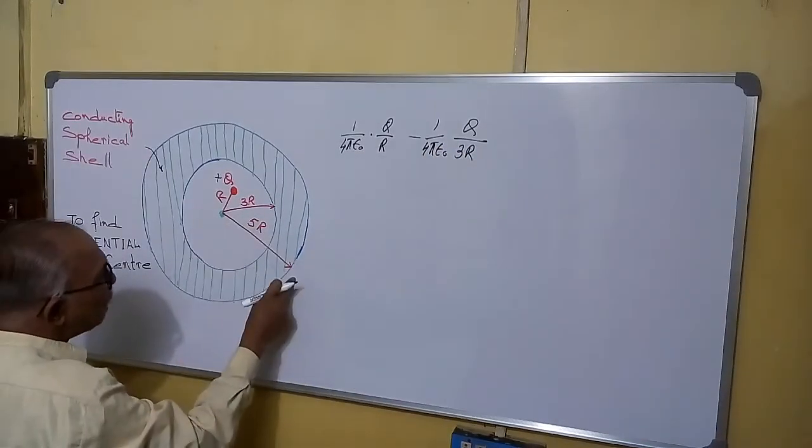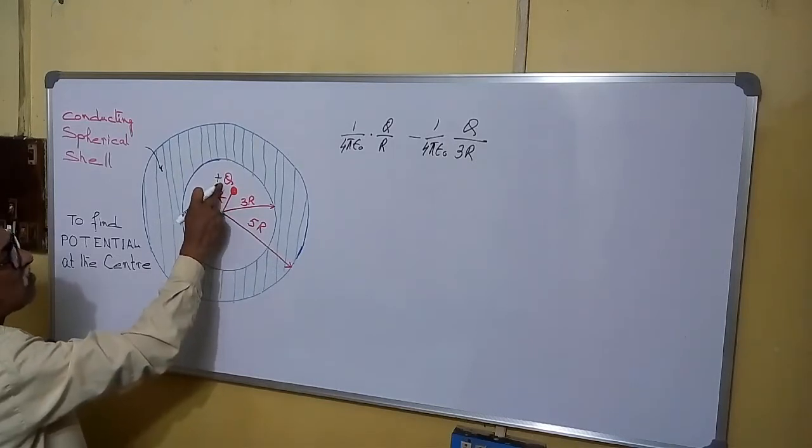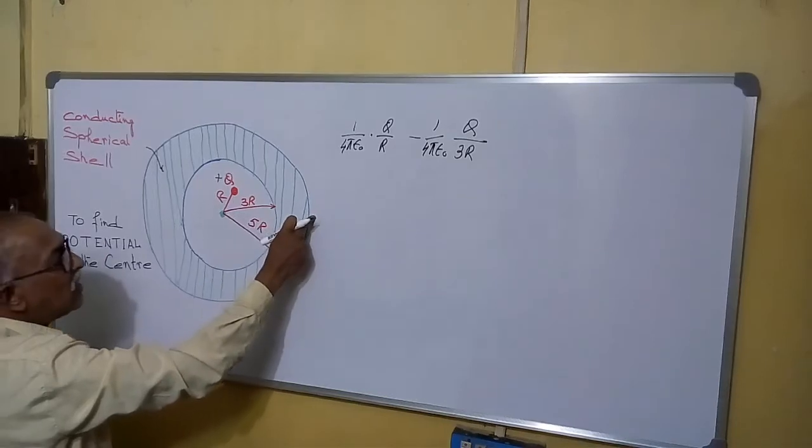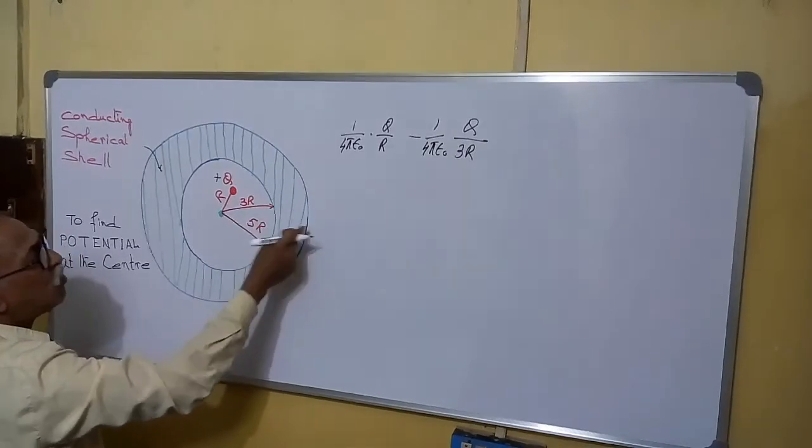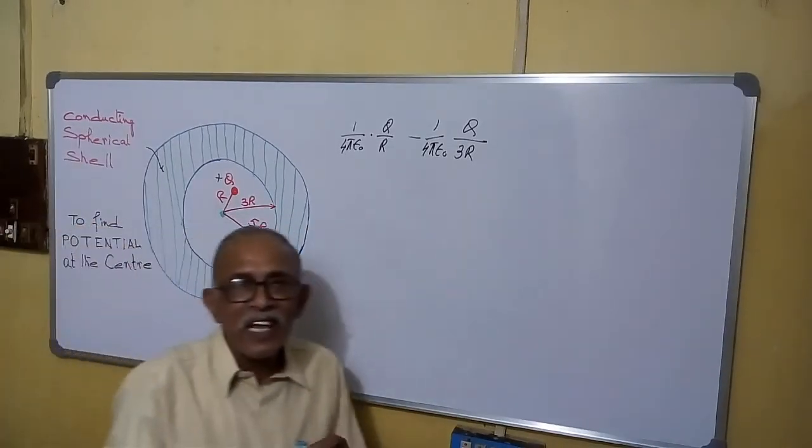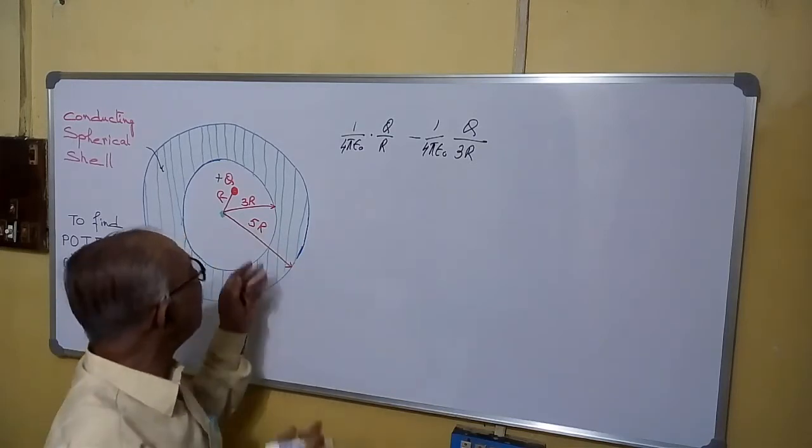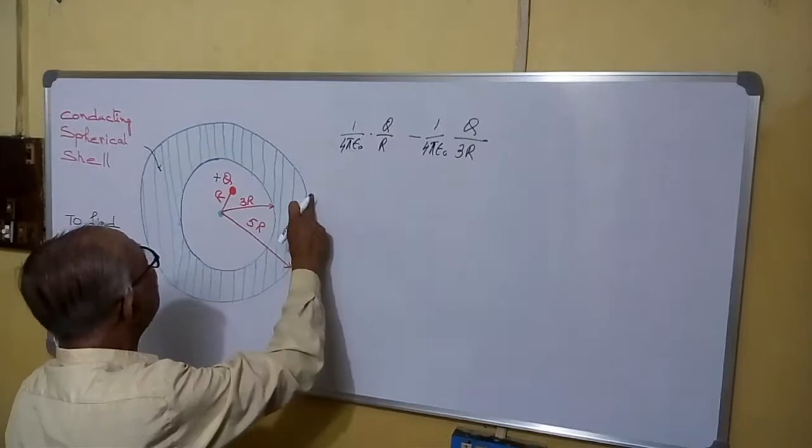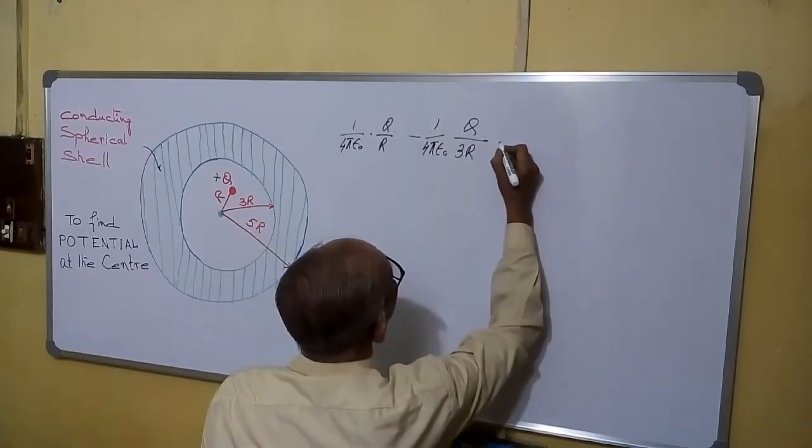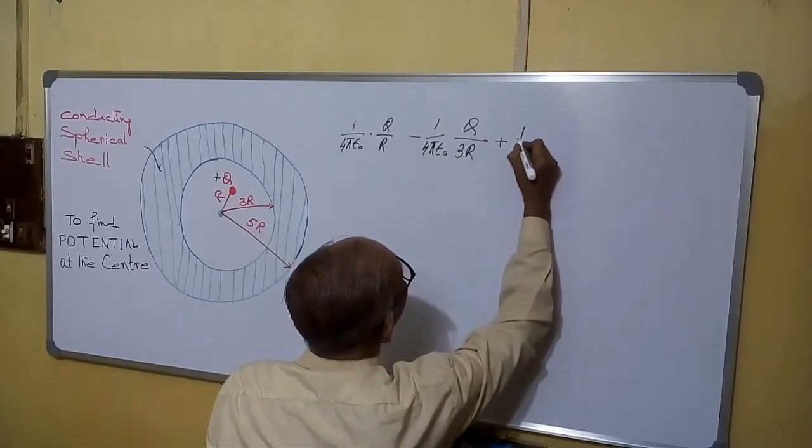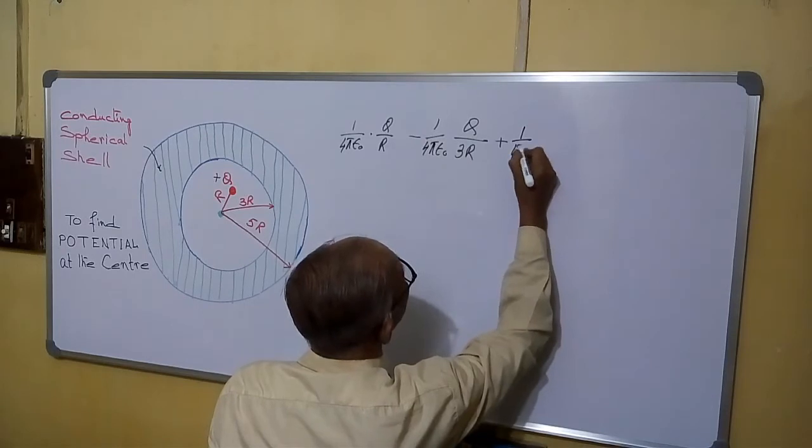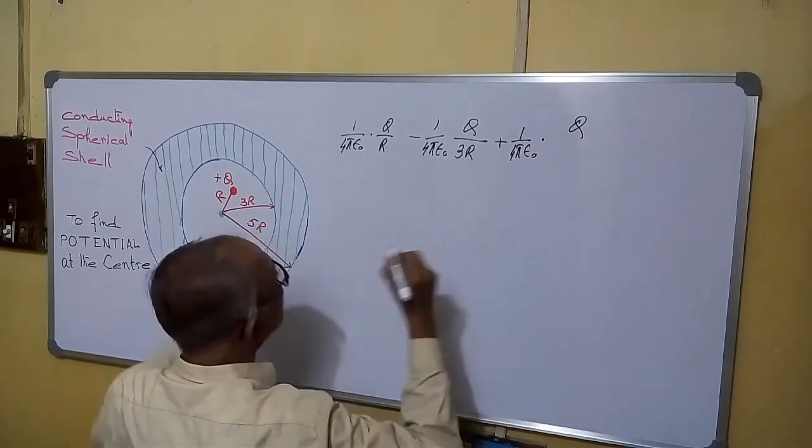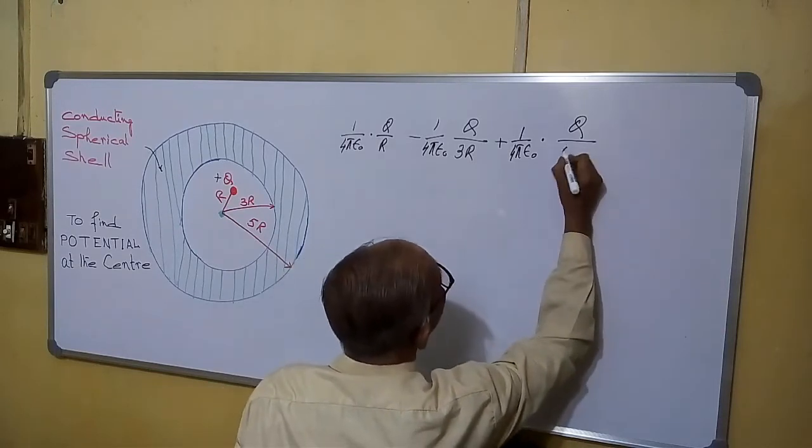Again see on this surface. Since it is a plus charge, here there will be induced negative charge and here will be induced positive charge. You are knowing at the nearer end, opposite charge and at the distant end, there will be like charge. So here again it will be plus. So plus 1 by 4 pi epsilon 0 into Q by, now the distance is 5R.